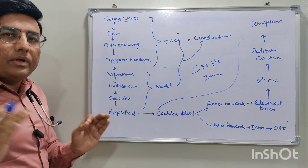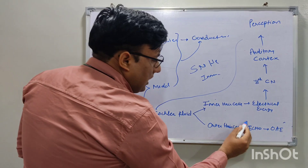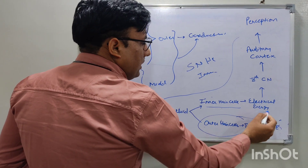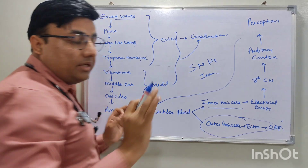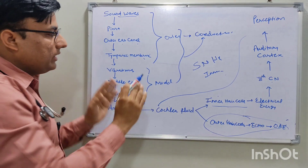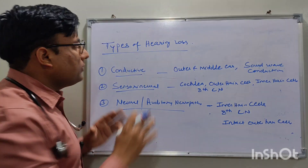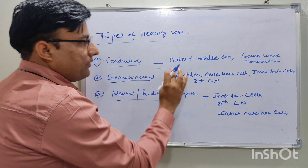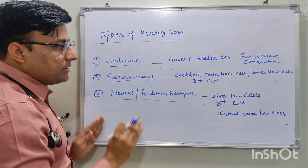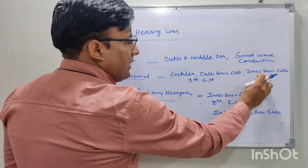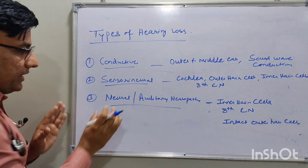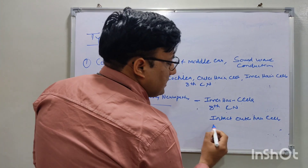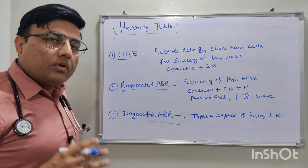A third type is neural hearing loss, also called auditory neuropathy. In auditory neuropathy, outer hair cells are normal, but the problem is in the inner hair cells, eighth cranial nerve, or auditory cortex. So three types of hearing loss exist: conductive hearing loss, sensorineural hearing loss, and neural hearing loss. In neural or auditory neuropathy, outer hair cells are intact.